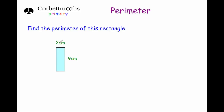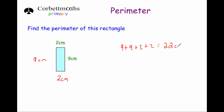Here we've got a rectangle and we know the top of it is two centimeters. Because it's a rectangle, if the top is two centimeters, the bottom is two centimeters also. And we know that the right hand side is nine centimeters, which means the left hand side will also be nine centimeters. So we're going to do nine plus nine plus two plus two. Nine plus nine is 18, plus two is 20, plus two is 22. So the perimeter of that rectangle is 22 centimeters.